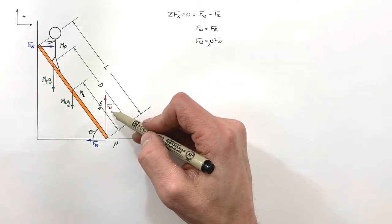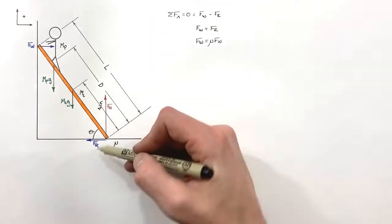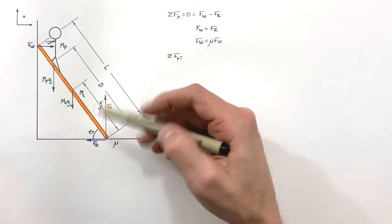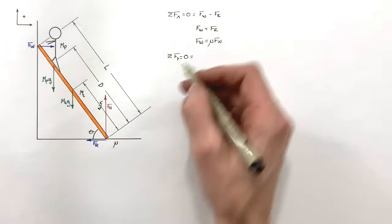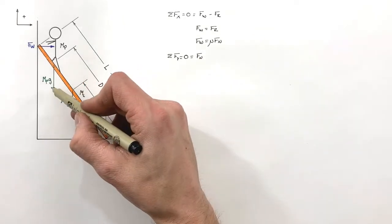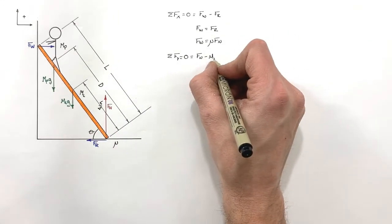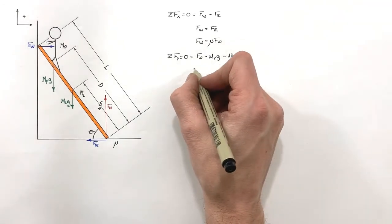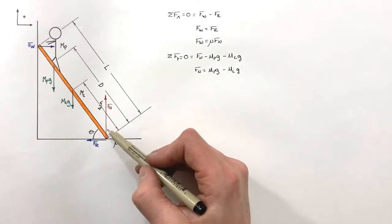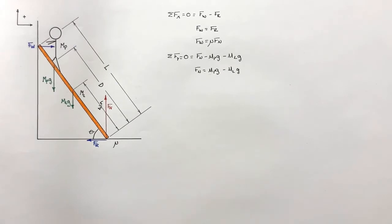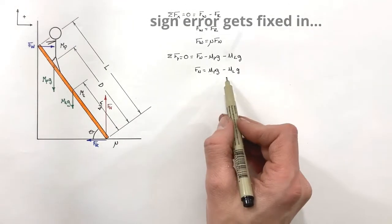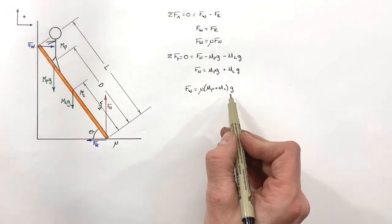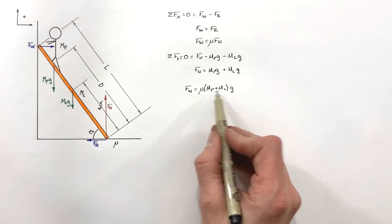To find the normal force, we look at the sum of all forces in the y-axis. Since the ladder isn't accelerating vertically, this sum also equals zero. The normal force acts upward, and the weights of the person and the ladder act downward, giving us fn equals mp times g plus ml times g. We can substitute this expression for fn into our earlier equation relating fw to mu and fn.